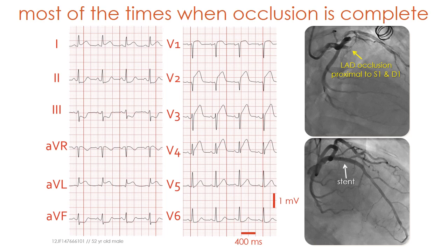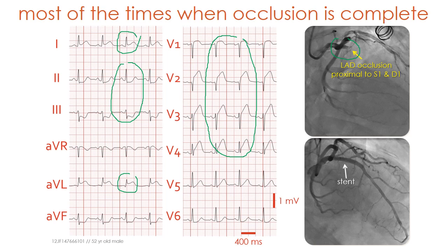Most of the times when there is a total occlusion of an epicardial coronary artery, we appreciate in the electrocardiogram the presence of an ST-segment elevation in the leads exploring the ischemic myocardium. Thus, in an occlusion of a left anterior descending coronary artery, we appreciate ST-segment elevation from V1 to V4 and also in leads AVL, with a reciprocal ST-segment depression in leads 2, 3, AVF, and also in lead V6.